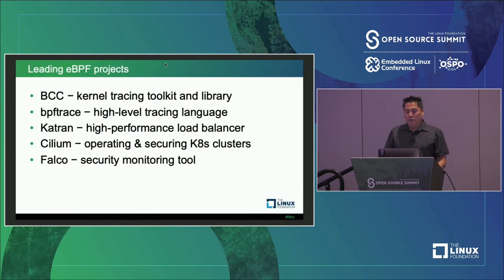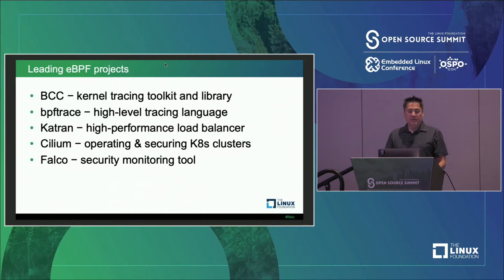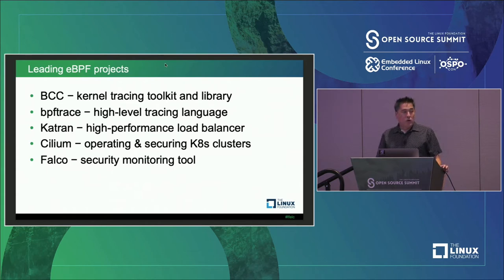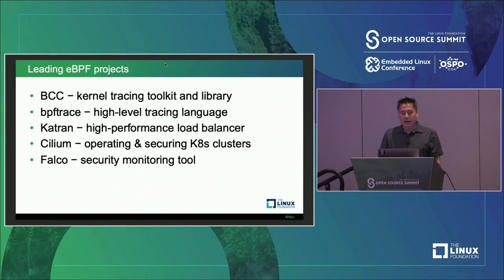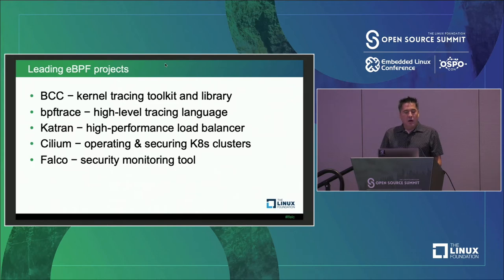Here are the leading eBPF projects. There is BCC, the compiler toolkit and library. There is BPF Trace, a high-level tracing language similar to what we're looking at today. Katran is Facebook's high-performance load balancer. Cilium is a Silicon Valley startup and the biggest proponent of eBPF right now — their technology is being used in Google Kubernetes Engine for V2 of the control plane. And lastly, Falco is an open-source security monitoring tool also targeting Kubernetes.